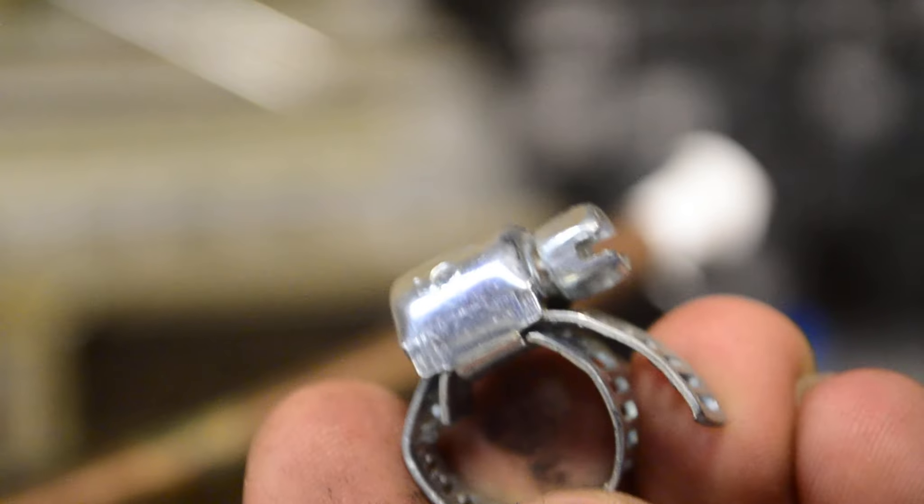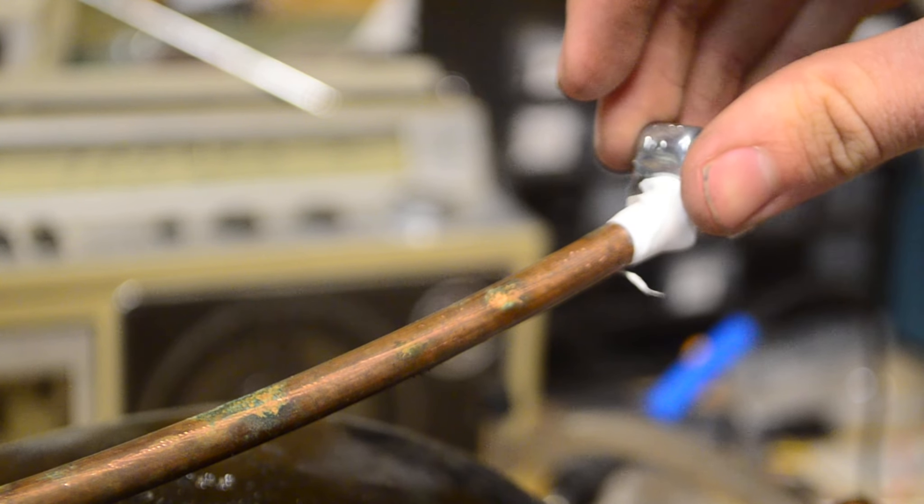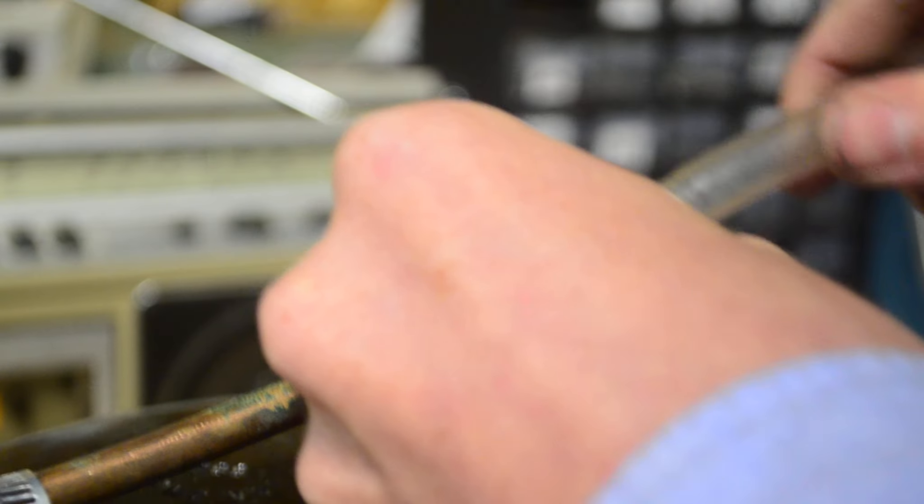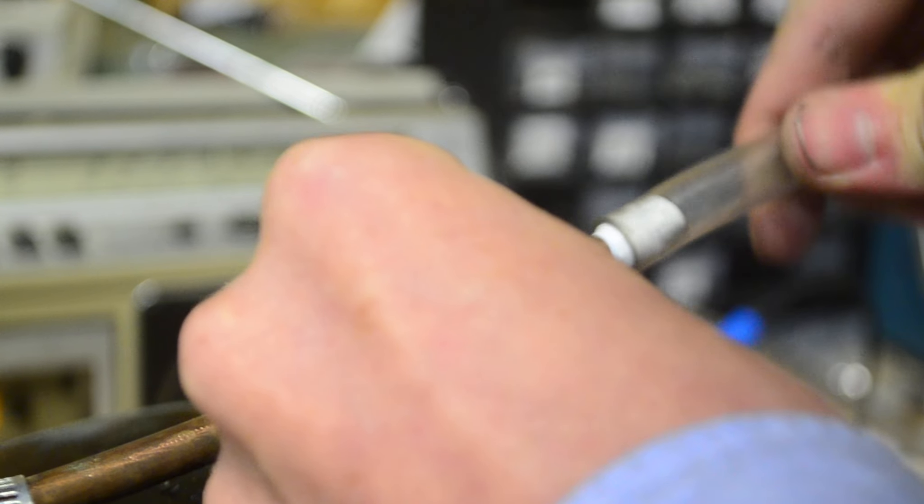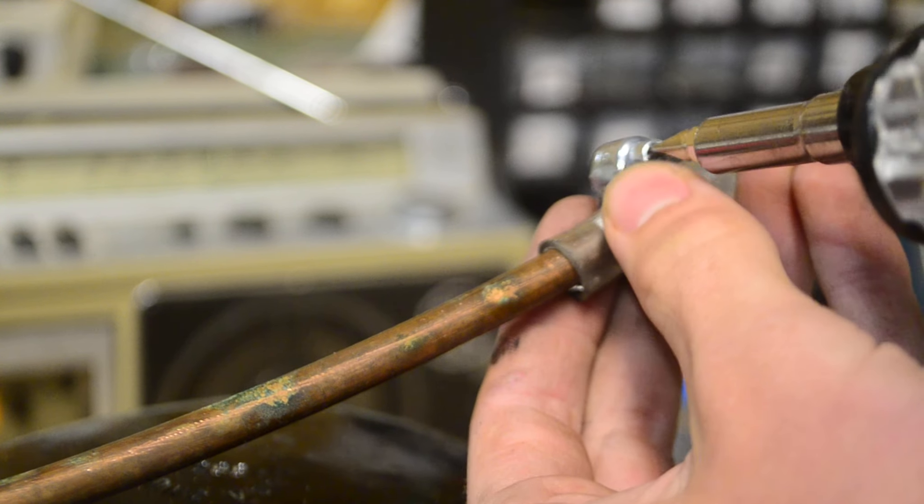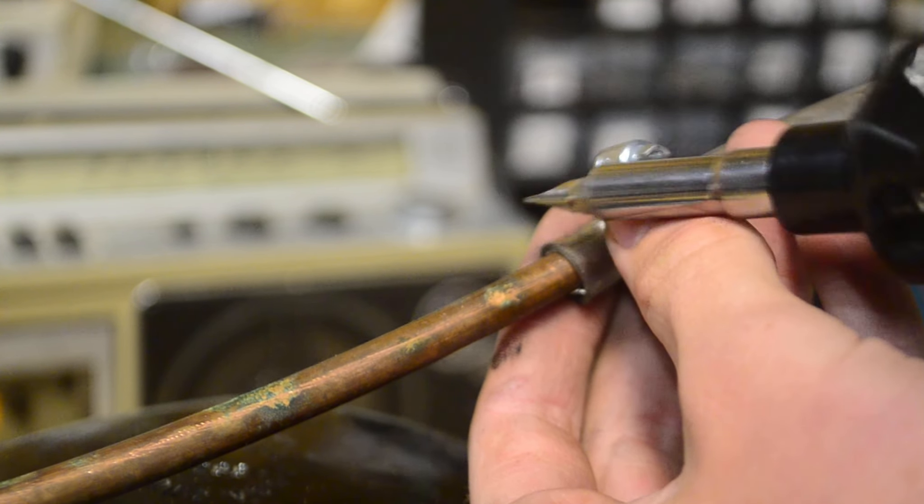To also help hold on the tube I'm going to be using this hose clamp. I'm going to slide this over before I put the tube on. Now I can simply slide the tube over the teflon tape and then I'm going to put the hose clamp over the part that has the teflon tape and tighten this down.